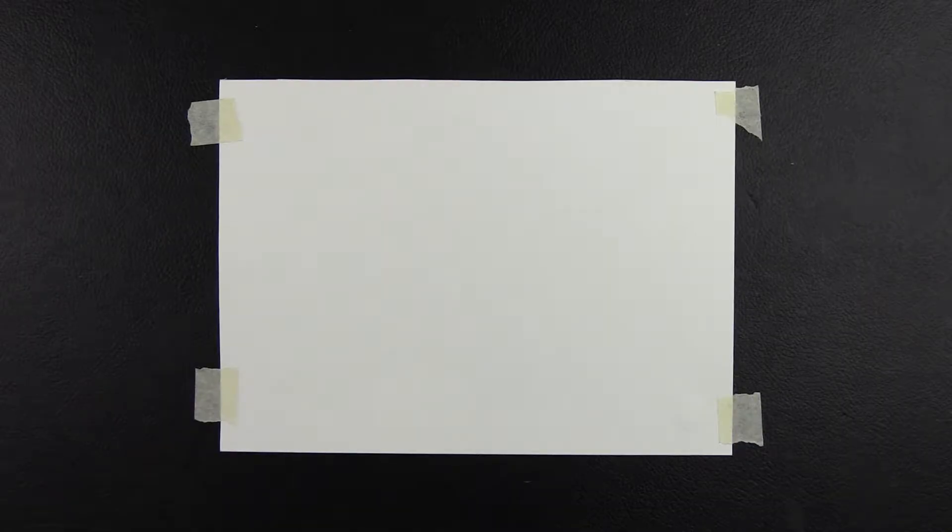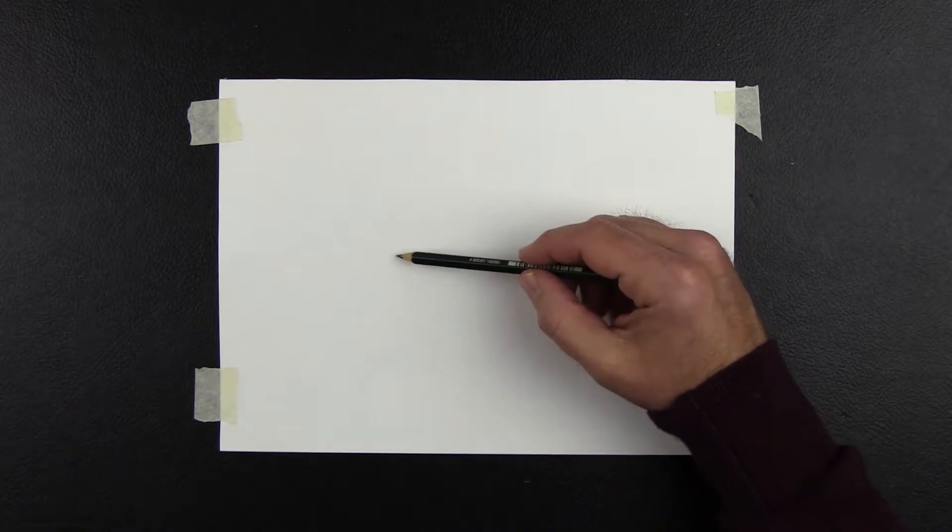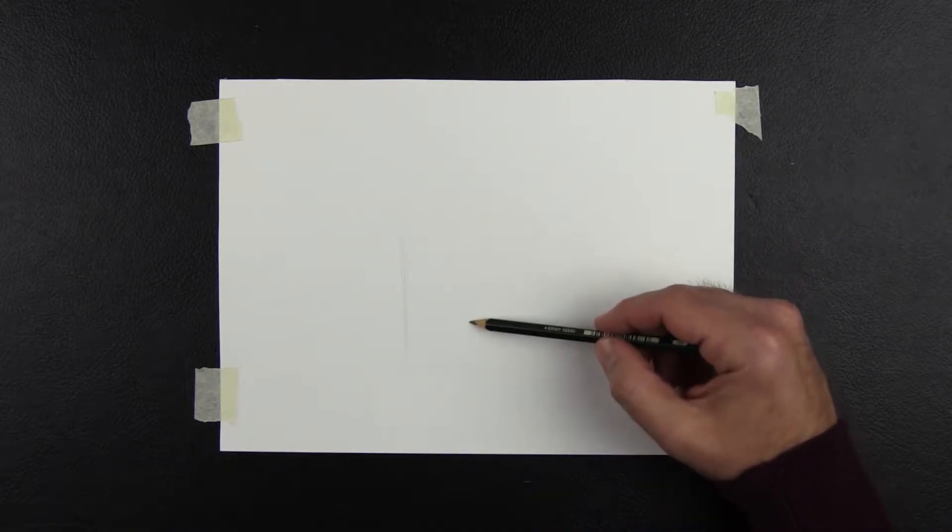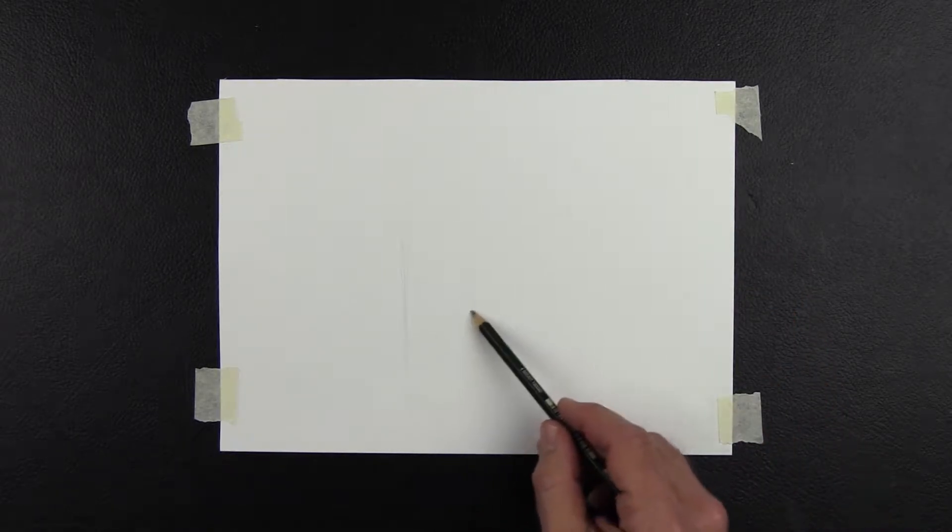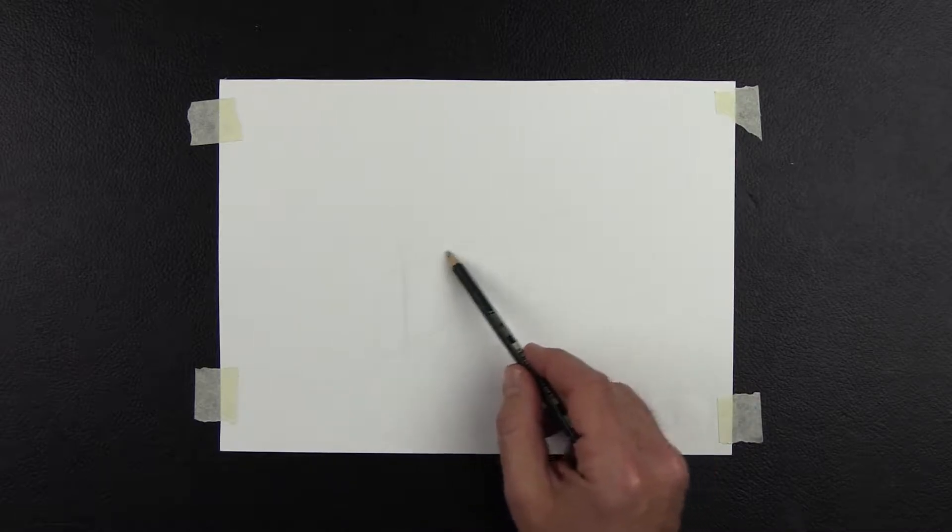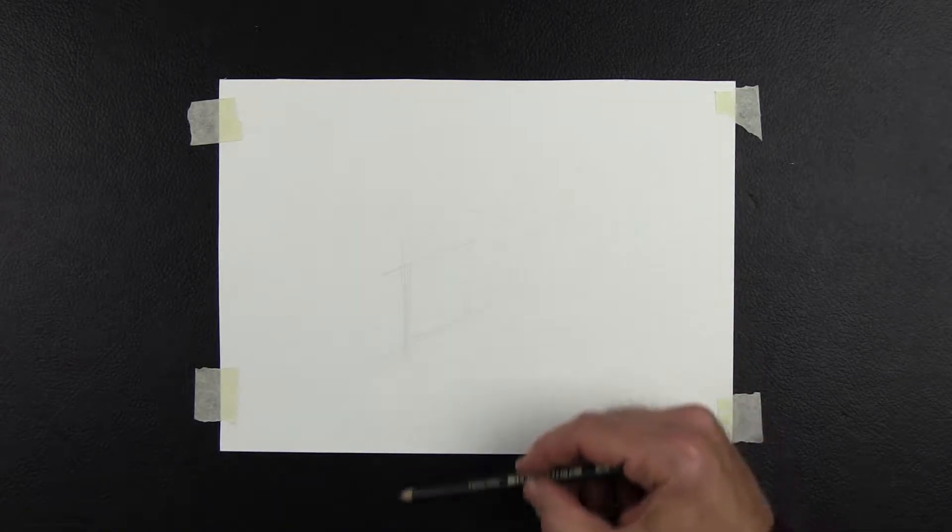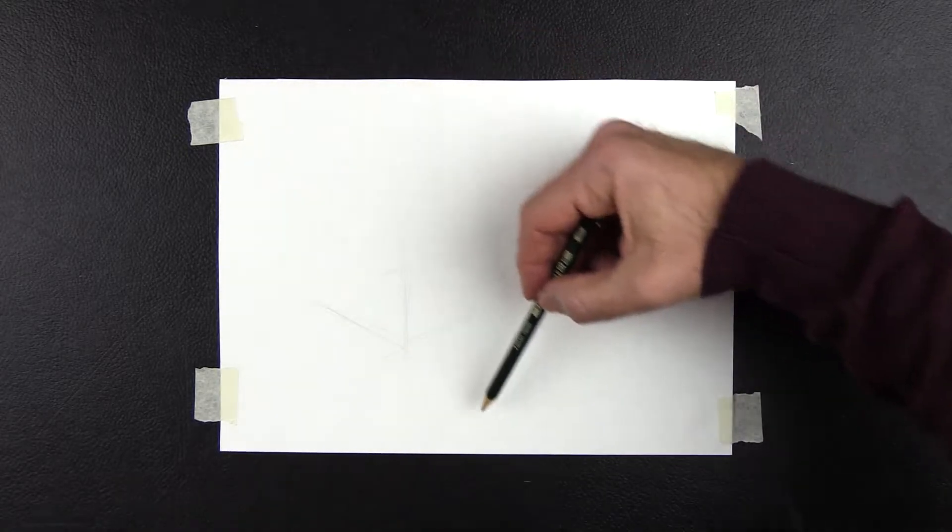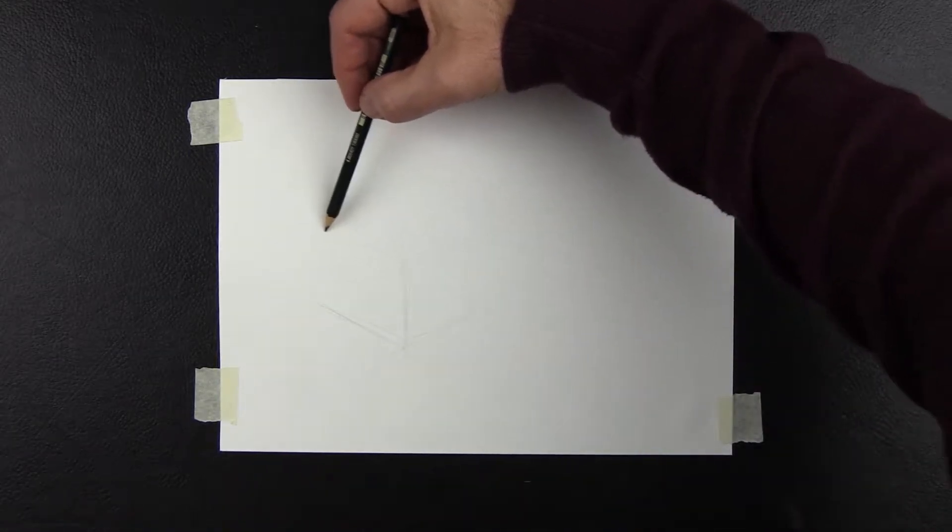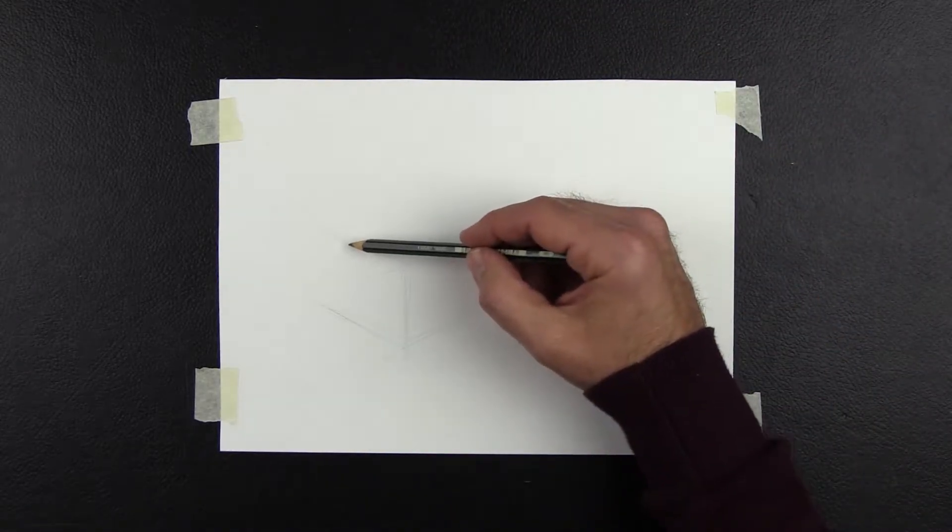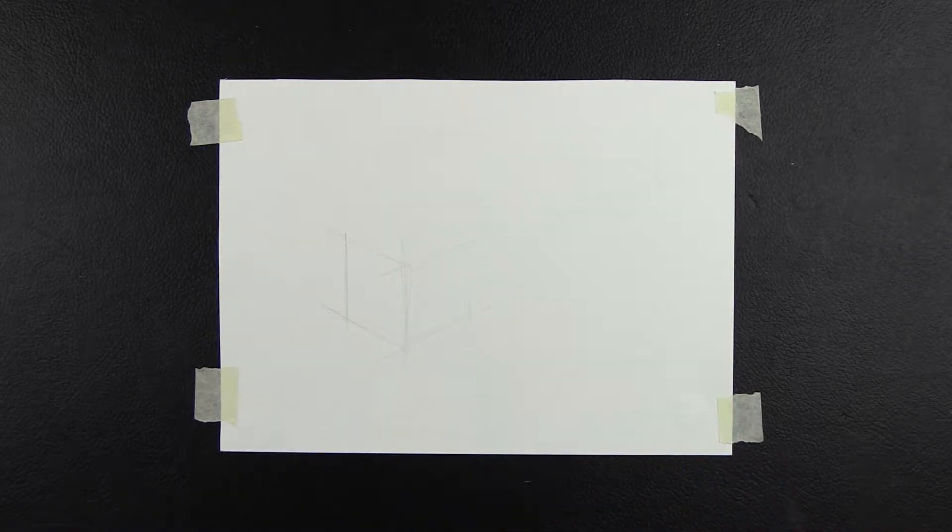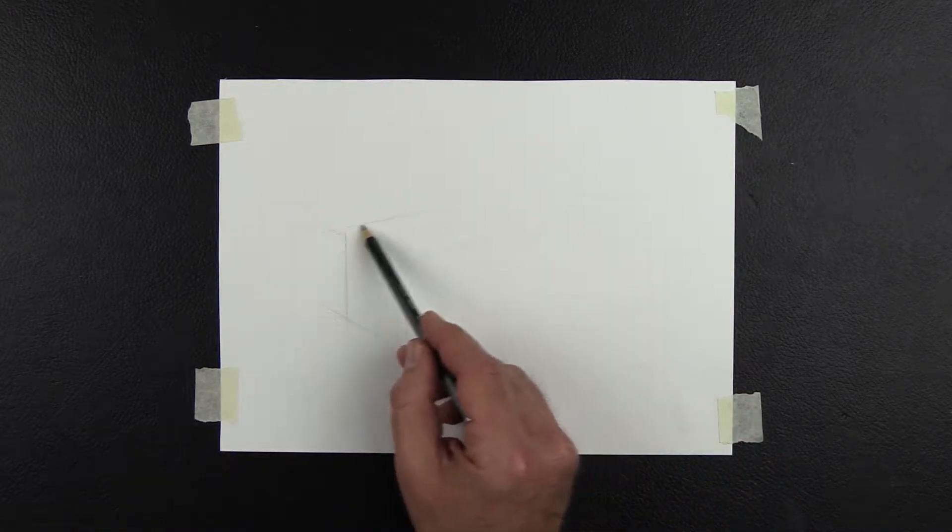First I'll sketch an object so that we can look at some of these value structures. I'm going to start by drawing a cube. I hold my pencil some distance from the point so I can get a very light touch. And I use a process called drawing through. That means I'm using longer sweeping light strokes to draw the edges of the cube and I'm drawing through the corners. I'm using more of my arm to draw instead of pivoting at my wrist. This helps me to get straighter lines.